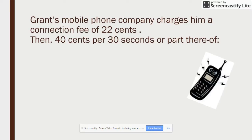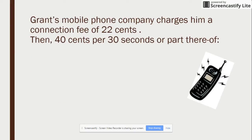For instance, Gantt's mobile phone company charges him a connection fee of 22 cents. Every single time he makes a phone call, he gets charged 22 cents. Then, 40 cents per 30 seconds or part thereof. So, even if he speaks for one second in the next 30 seconds, he gets charged for the next 30 seconds.